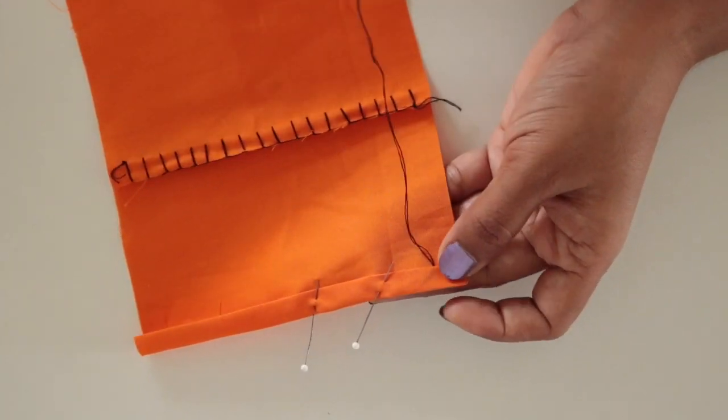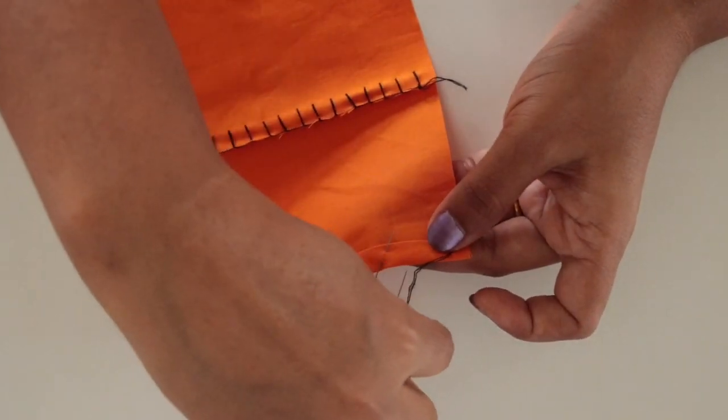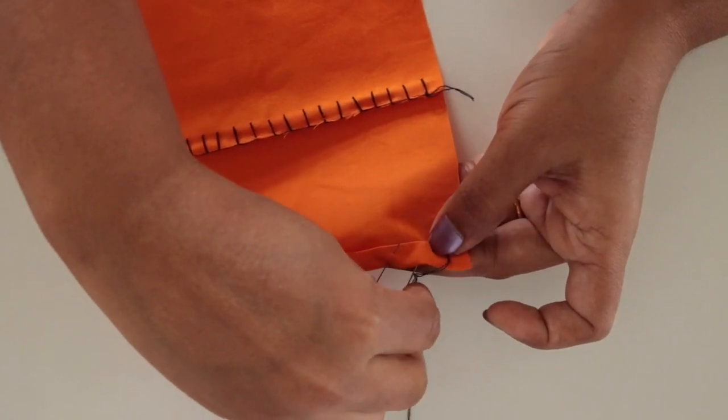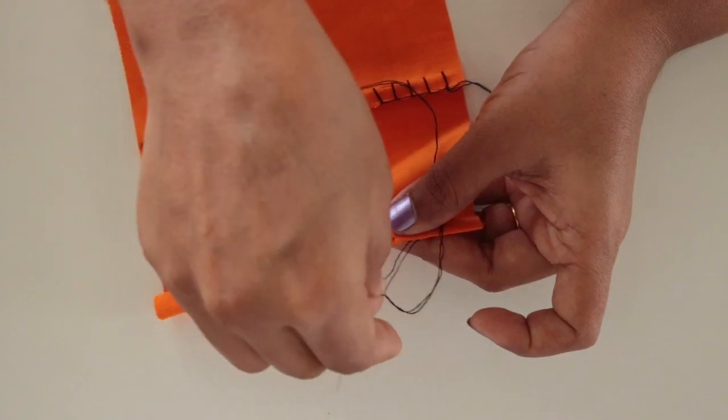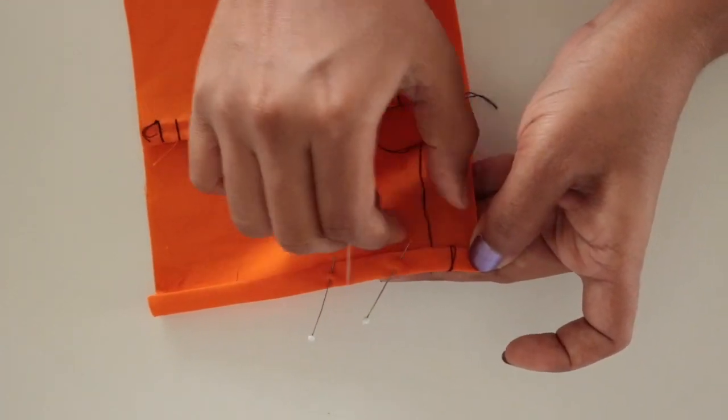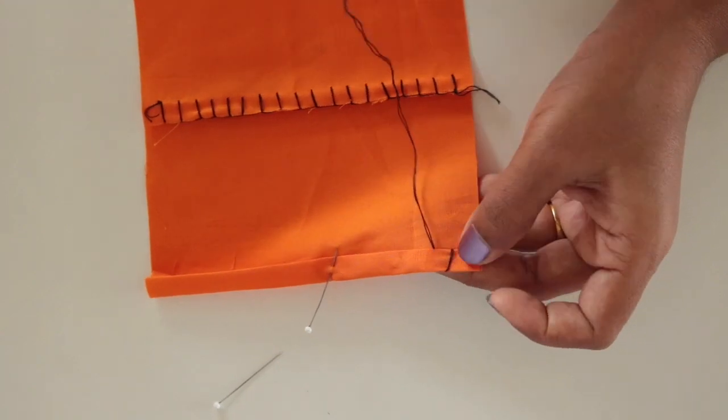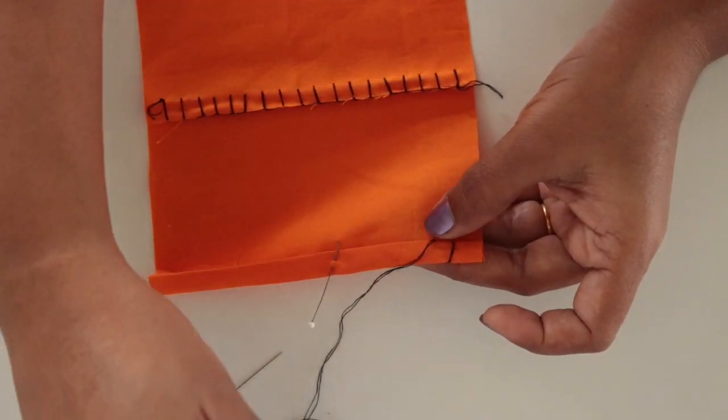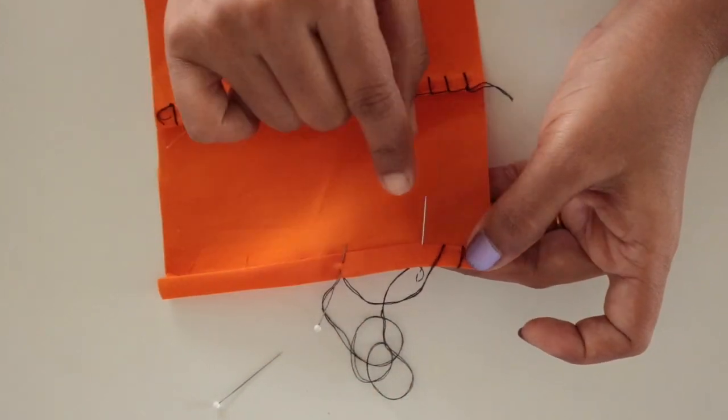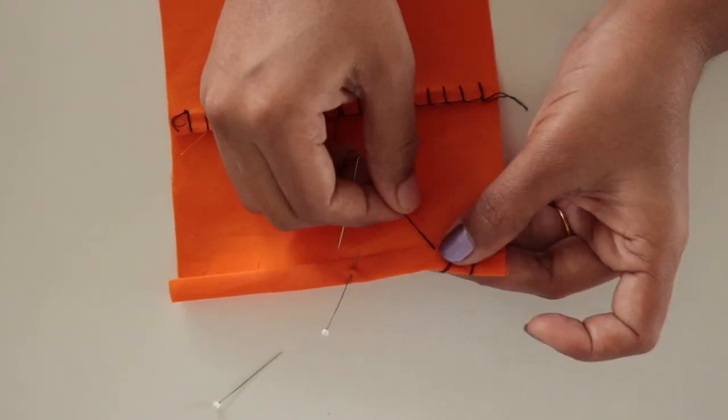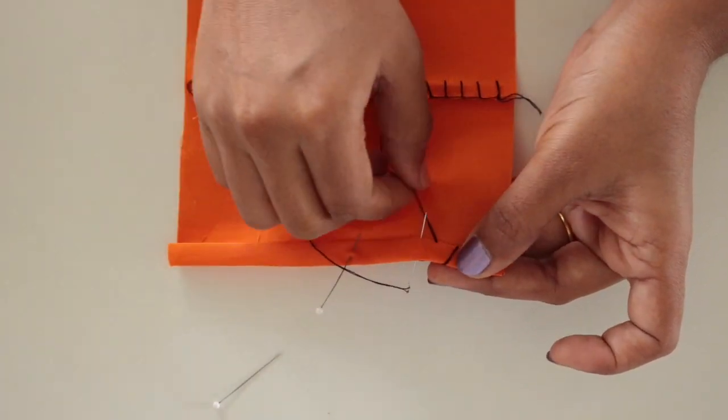Now take the needle and thread over to the other side of the fabric. Take about quarter of an inch, then again insert your needle from back and bring it to the front about quarter of an inch like this. Do the same, bring the needle from the back to the front.